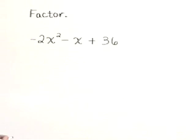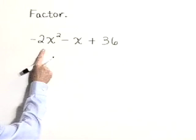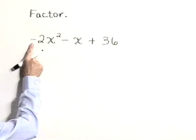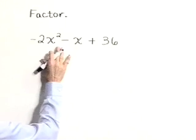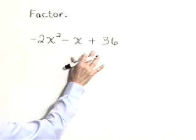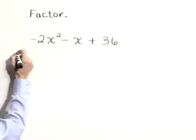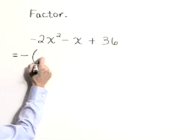Factor the expression negative 2x squared minus x plus 36. I'd like to begin this by factoring out a negative sign from each of these terms. Notice that there's really no greatest common factor other than what I'm going to use here as a negative 1 or a negative sign.